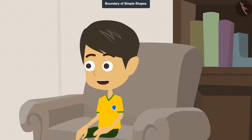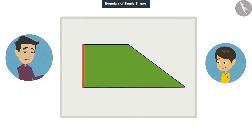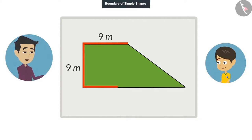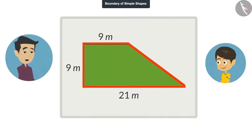Okay, tell me the length of all the lines. The length of this line is 9 meters. The length of this line is also 9 meters. The length of the bottom line is 21 meters. And the length of this slanting line is 15 meters.